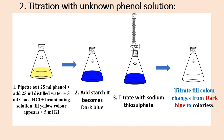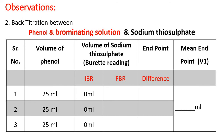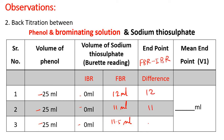This is your back titration. This observation table represents the back titration between phenol, brominating solution, and sodium thiosulfate. The volume of phenol taken is 25 ml each time. The burette readings for sodium thiosulfate, starting from 0 ml, gave 12 ml, 11 ml, and 11.5 ml. The differences are 12, 11, and 11.5 ml. Taking the mean of these three readings, divided by 3, gives a mean of 11.5 ml.